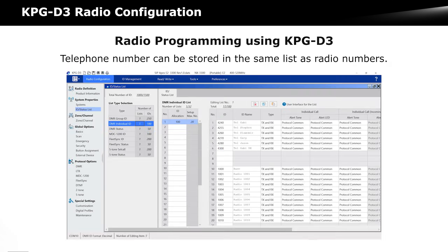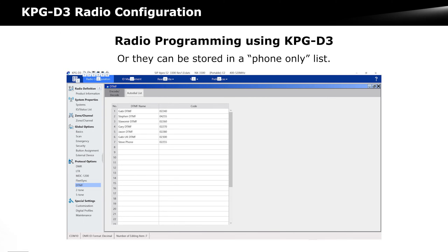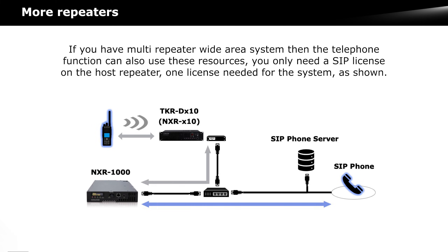Telephone numbers can be stored in the same list as radio numbers to make access simple and intuitive, or in a separate phone-only list. If you have a multi-repeater wide area system, the telephone function can also use these resources.